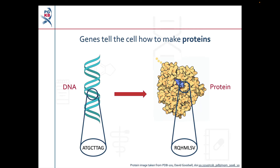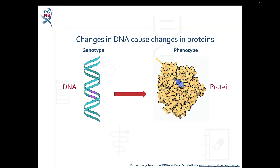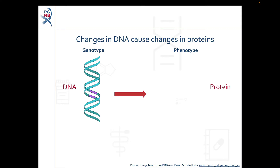Genes tell cells how to build proteins. Proteins are large molecules that have many different functions in the body. If the DNA sequence of a gene changes — shown by the purple area on the DNA strand — this could change how the protein is built. It might be a small difference so only the purple area of the protein is affected. However, DNA changes can also cause larger changes in the protein, so part of the protein could be missing or the protein might not be made at all.